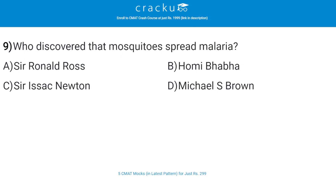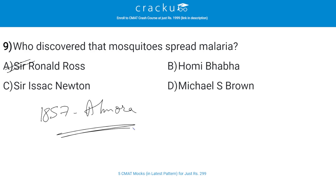Who discovered that mosquitoes spread malaria? The correct answer is A, Sir Ronald Ross. Sir Ronald Ross was born in Almora in India in 1857.